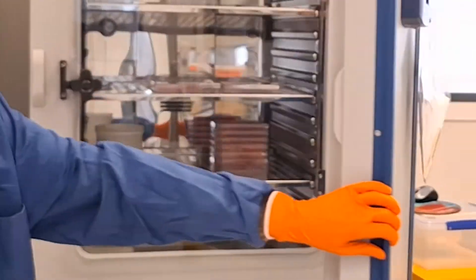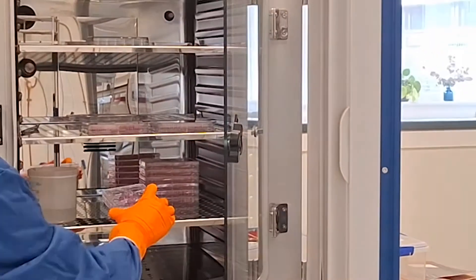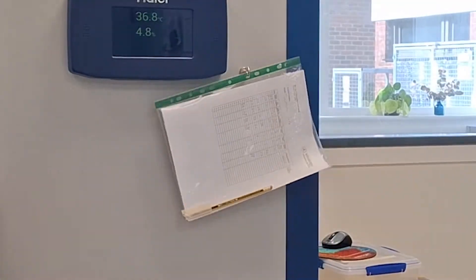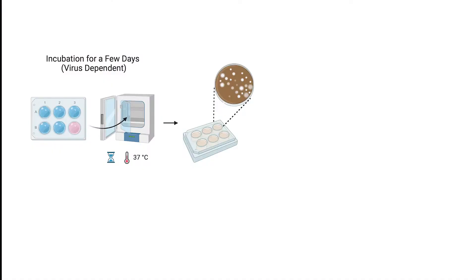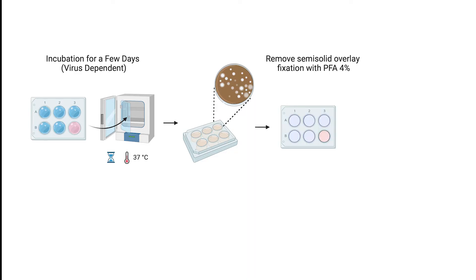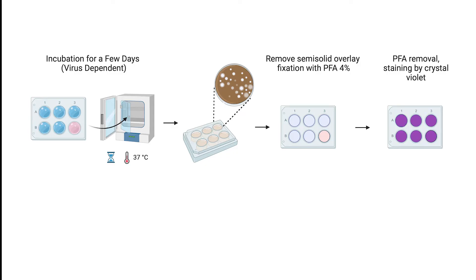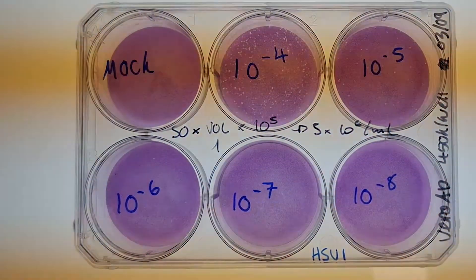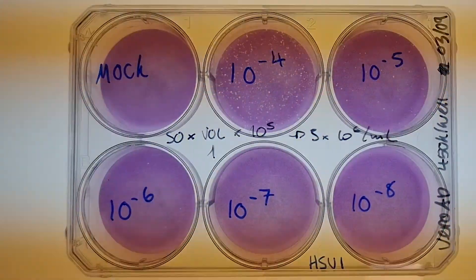The plate is then incubated for a few days to allow plaques to form. Each plaque represents the progeny of a single infectious virus particle. Once plaques are large enough to be visible, the cells are fixed with chemicals like formaldehyde to preserve the structures and stained with crystal violet. The result: healthy cells appear purple, while the plaques where cells have been destroyed stay clear.